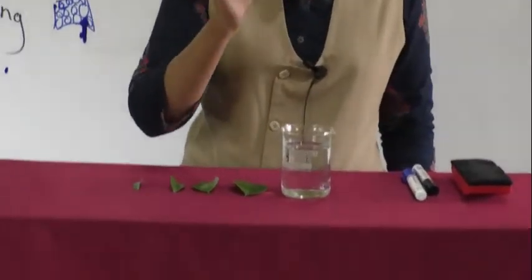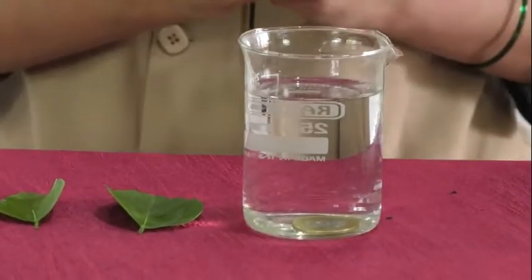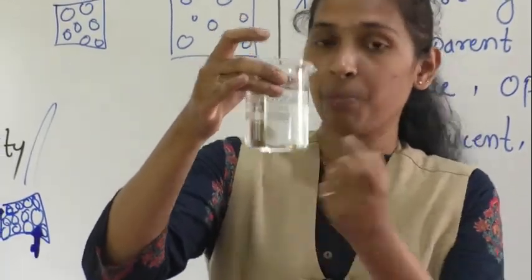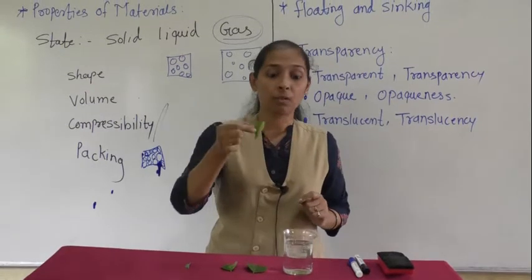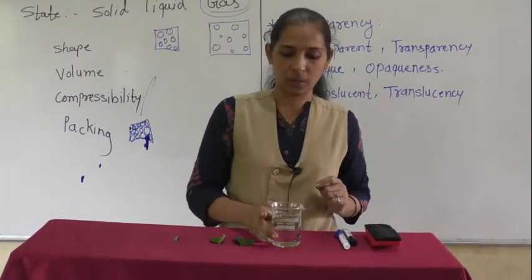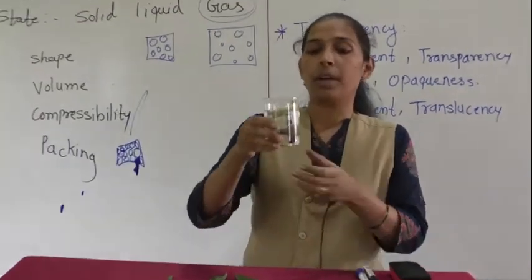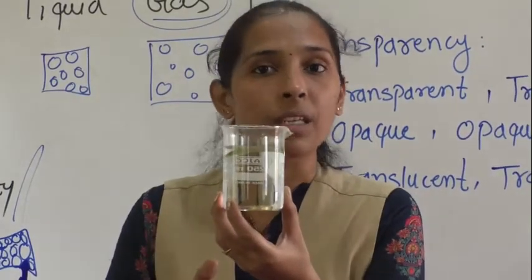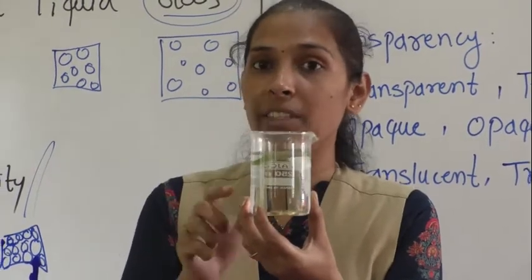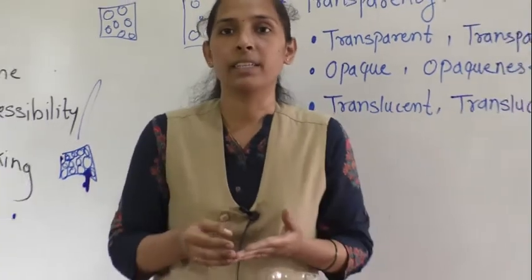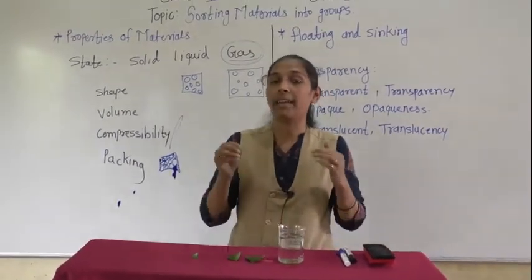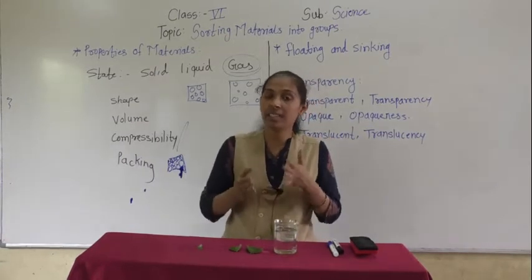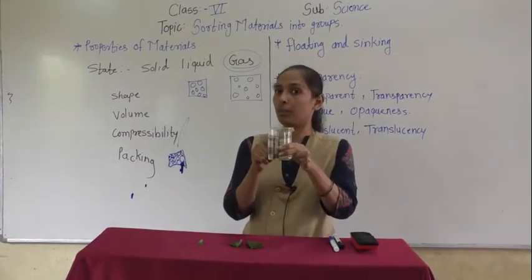The coin goes to the bottom of the beaker — it gets settled at the bottom. Now I will add this leaf into the water. You can see the leaf does not go to the bottom — it is floating on the surface of the water. From this activity, we can see that certain materials are heavier than water and they sink, while certain materials are lighter than water and they float on the surface.